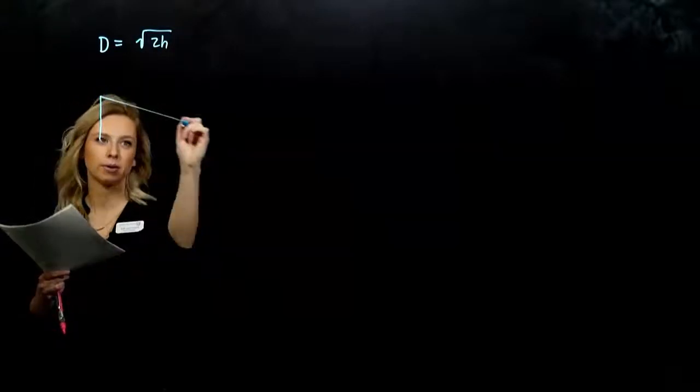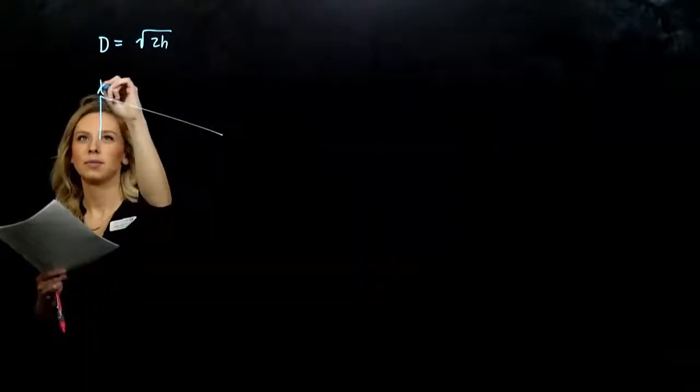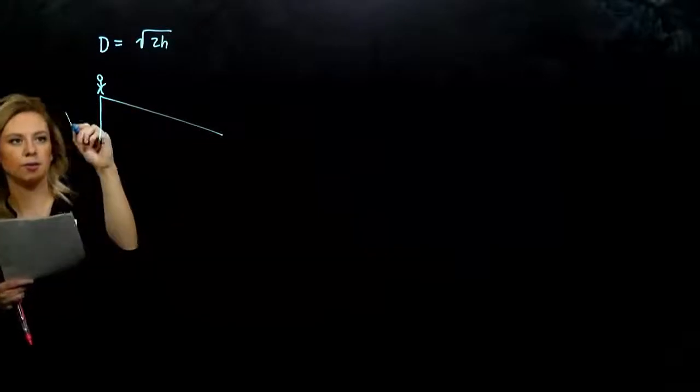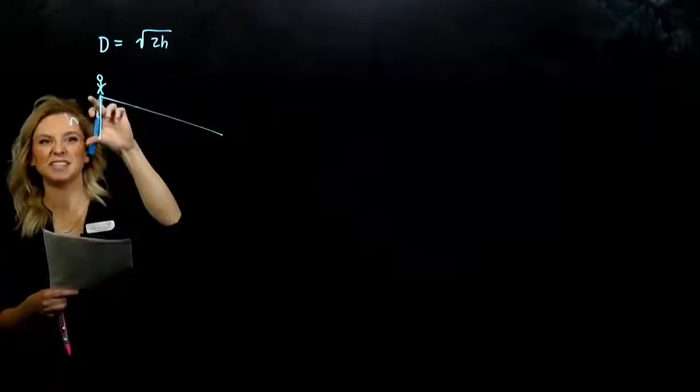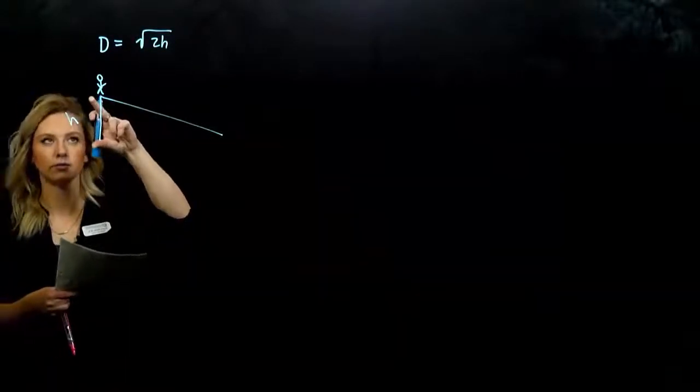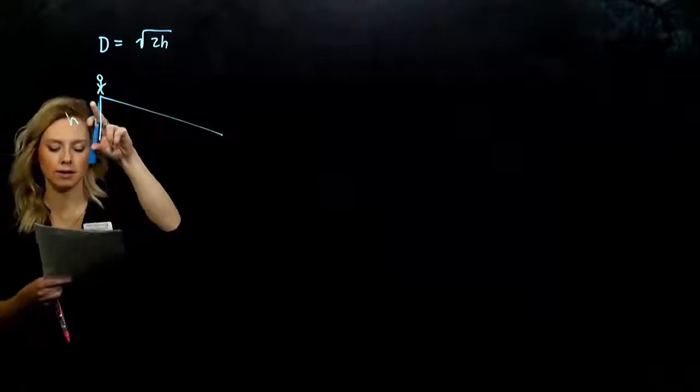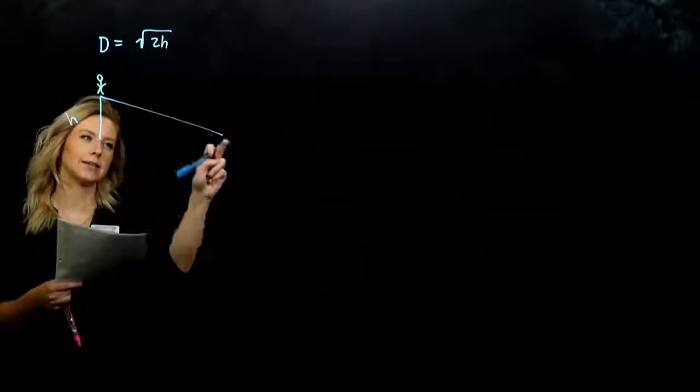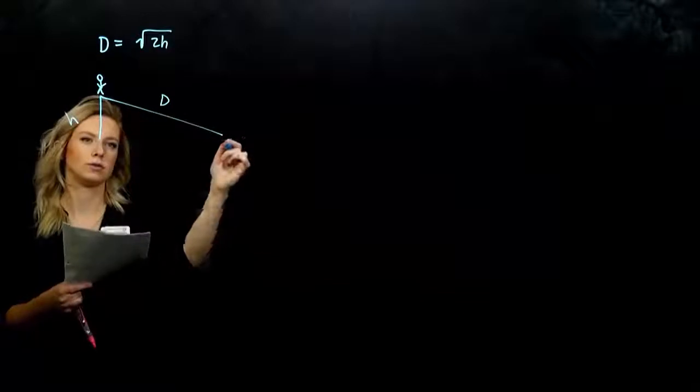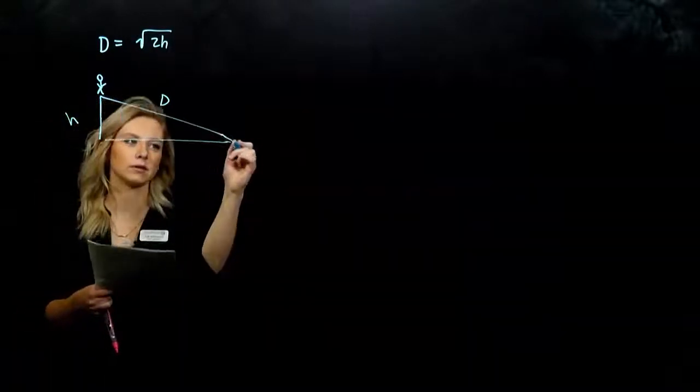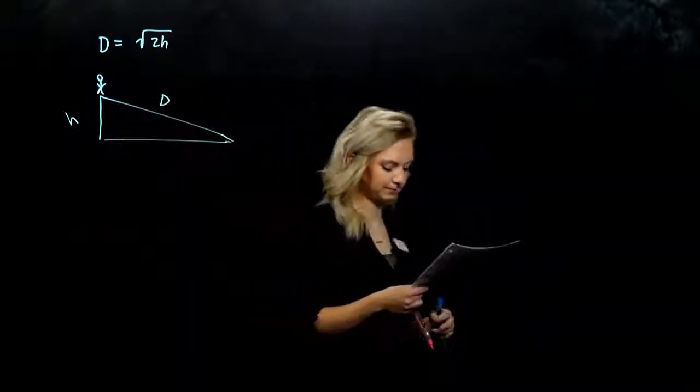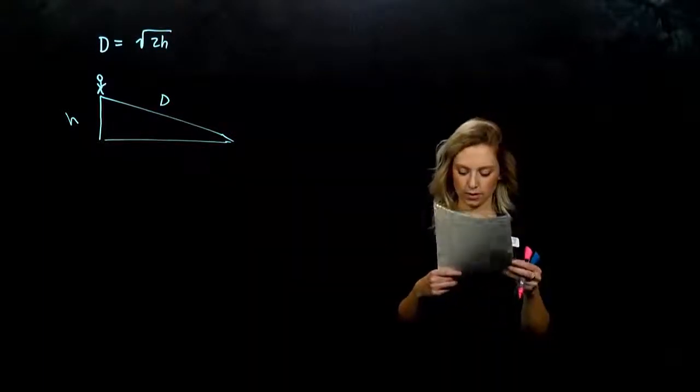I've got my person on top of the mountain, and they are some distance up into the air, some height in feet, and they can actually see this distance, d, off into the horizon. So we've got a little triangle going on. And we're going to use that to answer a few questions.